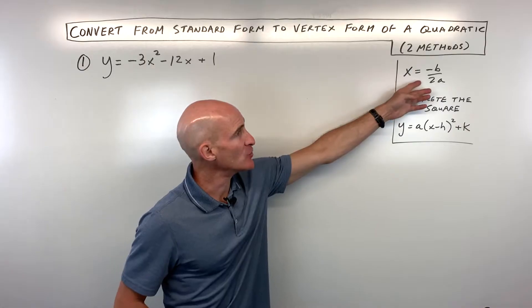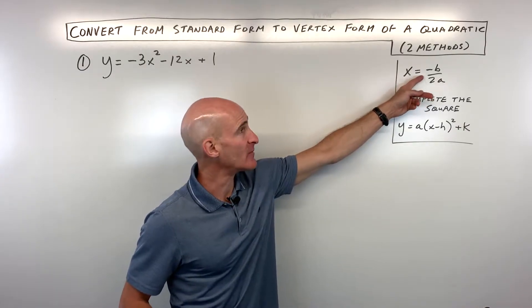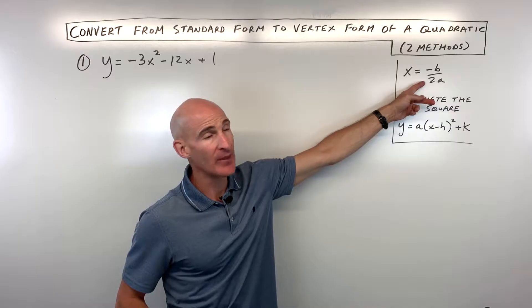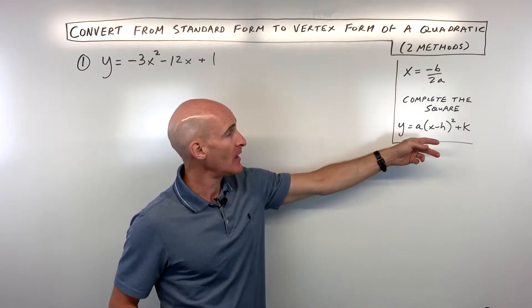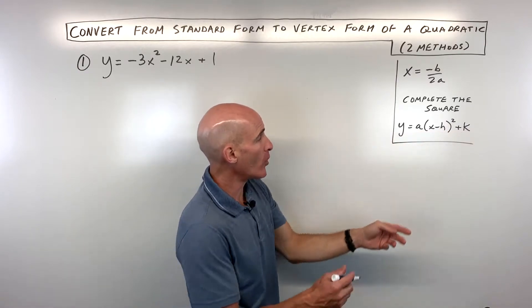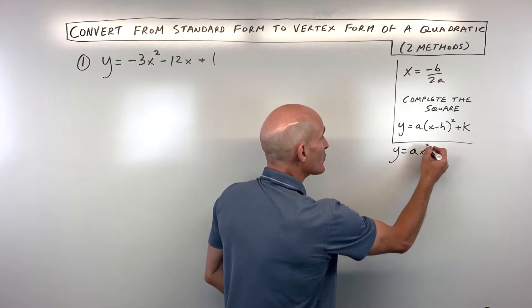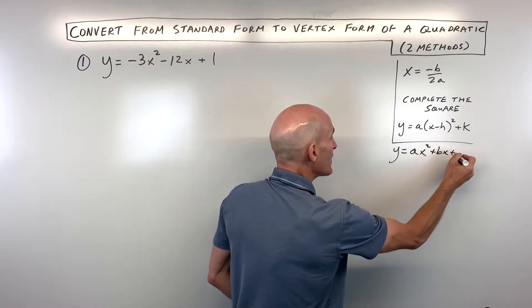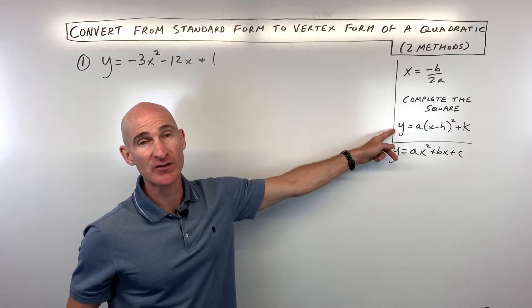The first way is to find the x-coordinate of the vertex by using this formula: negative b over 2a. The other method we're going to use is completing the square. The standard form we're being given is y equals ax squared plus bx plus c, and we're converting it into vertex form.